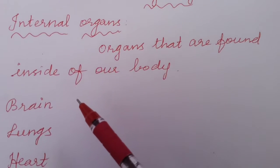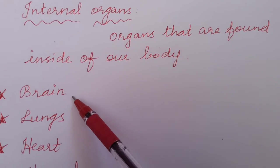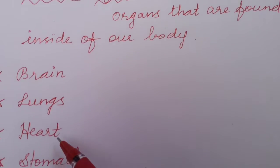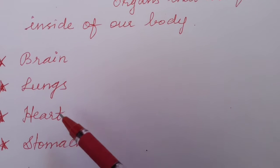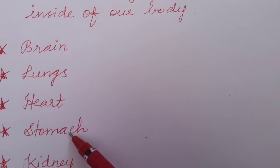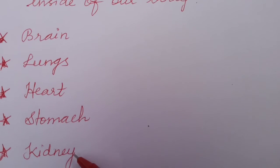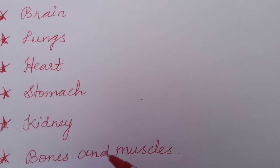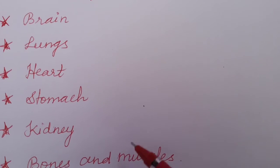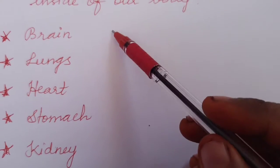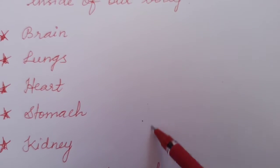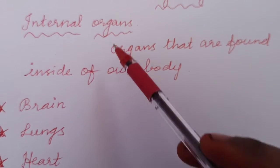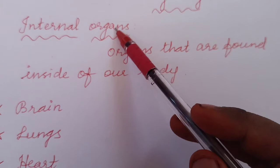They are brain, lungs, heart, stomach, kidney, bones and muscles. So these are some of the internal organs.